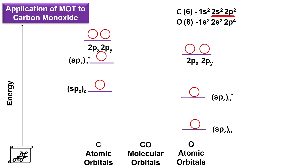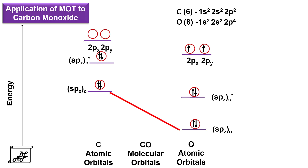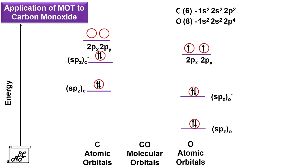Carbon has 4 valence electrons total: 2 go to spz(carbon) and 2 go to spz*(carbon). Oxygen has 6 valence electrons: 2 go to spz(oxygen), 2 go to spz*(oxygen), and 2 unpaired electrons occupy 2px and 2py according to Hund's rule. Now, a key principle of molecular orbital theory is that two atomic orbitals will overlap only when they have comparable energy. Because of oxygen's high electronegativity, the spz orbital of oxygen is very low in energy and therefore cannot overlap with the spz orbital of carbon — it remains non-bonding.